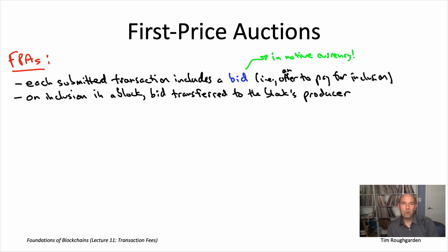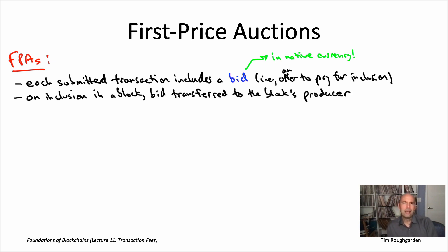The usual wrinkle with a longest chain protocol like Bitcoin or Ethereum is that it's not accurate to say the transaction creator's bid is transferred immediately to the miner, because it's only going to be a valid transfer that other people pay attention to if this block winds up on the longest chain and is extended by some number K of additional blocks. But whenever this block is sufficiently deeply ensconced in the longest chain, you should think of this bid as being permanently transferred to the miner.